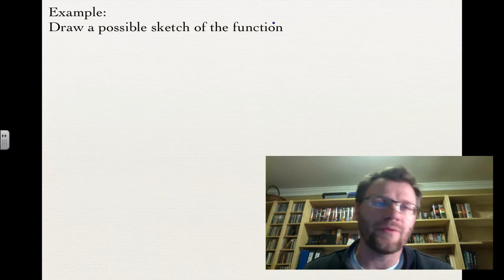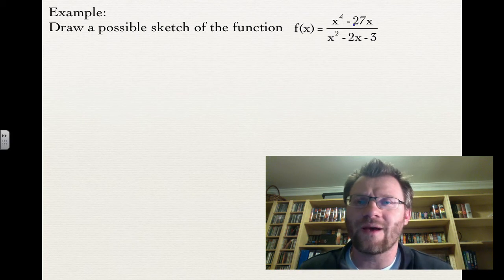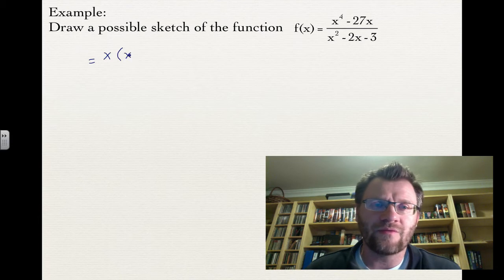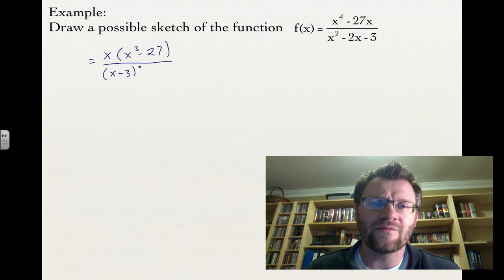So example: draw a possible sketch of the function f(x) equals x to the 4th minus 27x divided by x squared minus 2x minus 3. What we need to do is factor this. First, I can take out a greatest common factor of x at the top, leaving x cubed minus 27. In the bottom, I can factor it: two things that multiply to negative 3 but add to negative 2, that's x minus 3 and x plus 1.